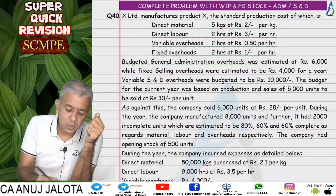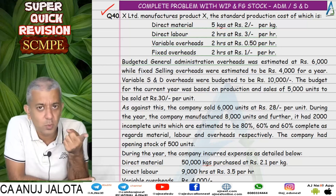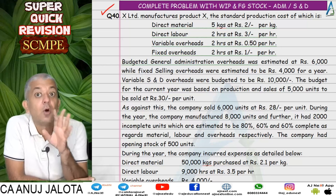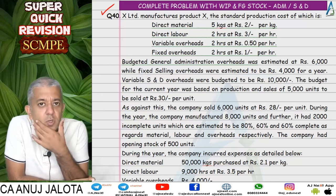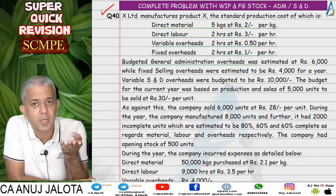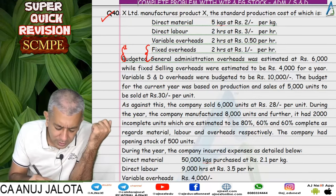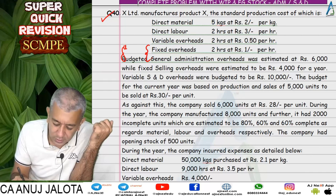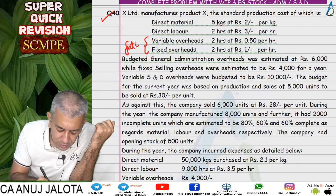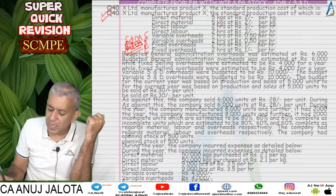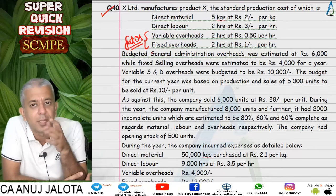Question number 40 was our first question where we had WIP stock and finished goods stock. There was no material stock — if there had been material stock, we would have followed either the partial plan or single plan. Variable overheads and fixed overheads by default are deemed to be factory overheads. If it were administration and S&D overheads, the problem would give you that particular data.